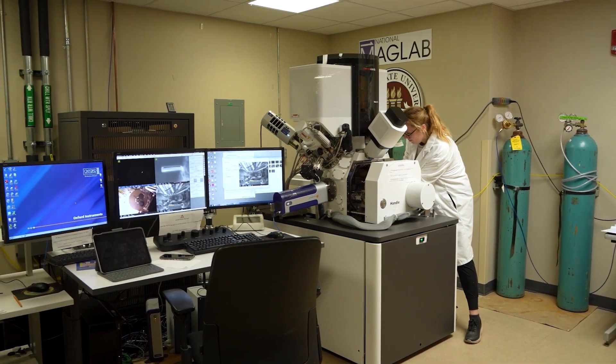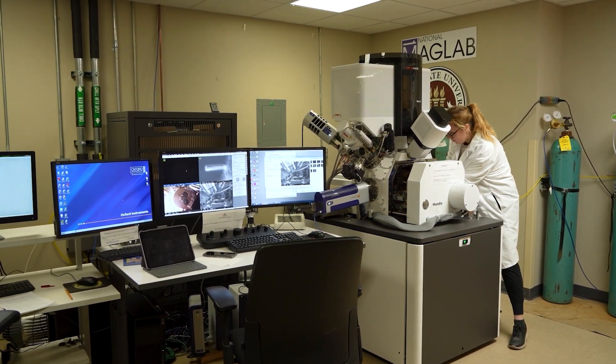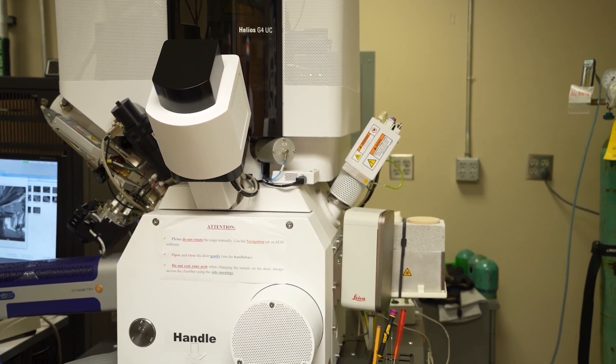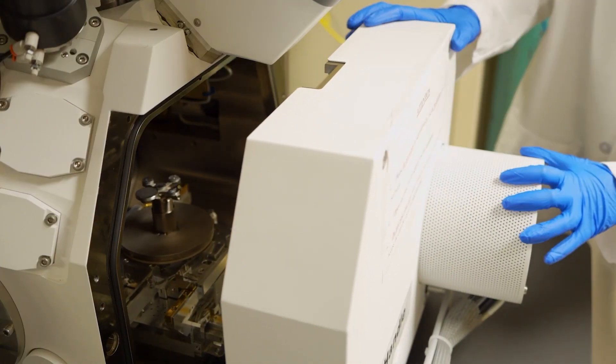Rather than using light like a traditional optical microscope, a scanning electron microscope uses a high-energy beam of electrons to scan a sample and produce an image.